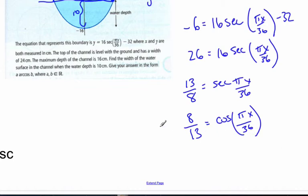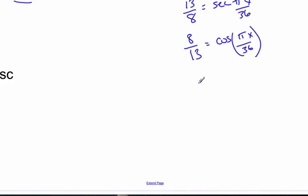Now, there is a clue that I have to answer in terms of arc cosine. So I'm going to take the inverse of cosine, which is arc cosine of 8 over 13, and that equals pi x over 36.